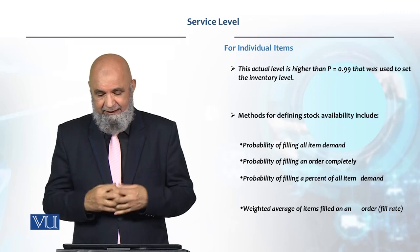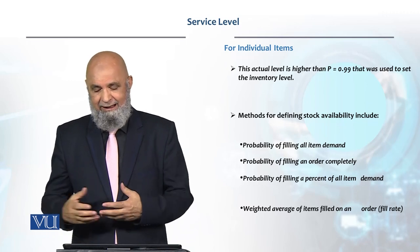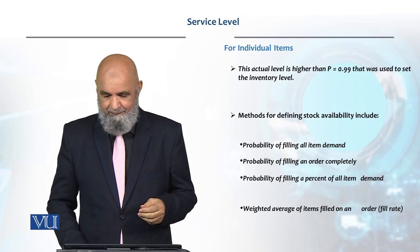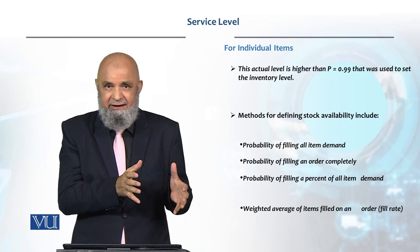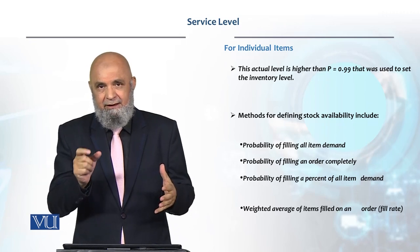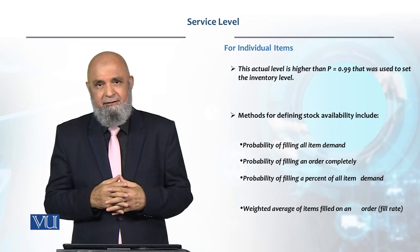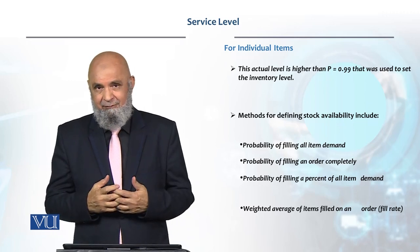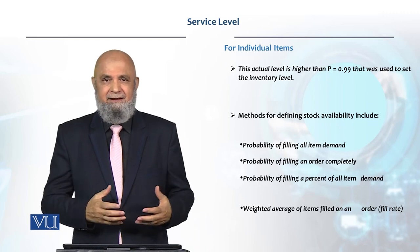There are different measures. Stock availability is different. Probability of filling all item demand — sari order mein kai items hain to un sab ki probability kya hai hum is ko fill kar den. Probability of filling an order completely — ek jagah hai ke kuch us ki probability dous rahi hai ki pura order jo jitnay bhi the, agar us mein se ek bhi product aap supply nahi kar sake to balkay bhi kata. Percent of all item demand jo hai wo fill kitna ho raha hai. So these are basically different measures which are used for service level.